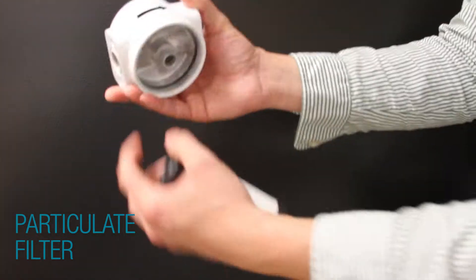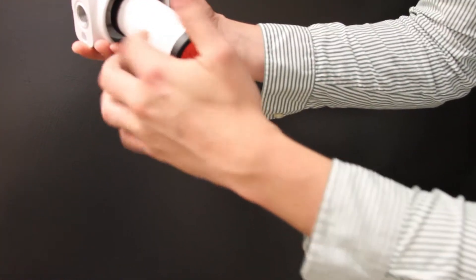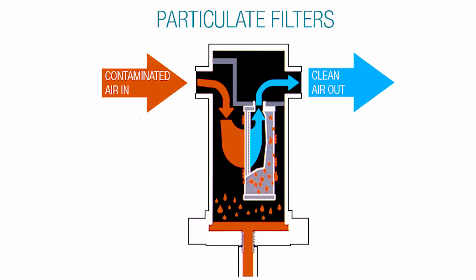On a particulate filter, you will notice that the flow is going to the sides of the element. The contaminated air is no longer flowing down the center like on a coalescing filter. The contaminated air is being forced through the sides and into the center of the element.